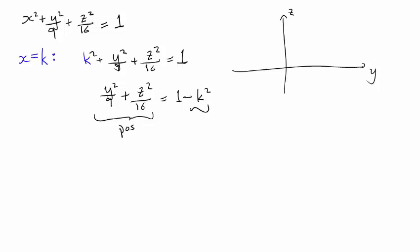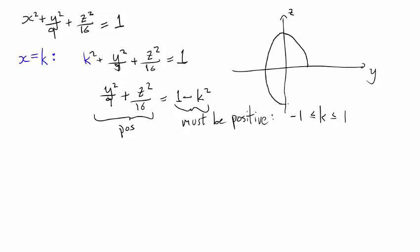So the right-hand side must be positive as well. What does that mean for k? It means k squared can't be bigger than 1, so k has to be between minus 1 and 1. And as long as k is between minus 1 and 1, the equation y squared over 9 plus z squared over 16 equals 1 minus k squared describes an ellipse that is a little longer along the z-axis than along the y-axis.